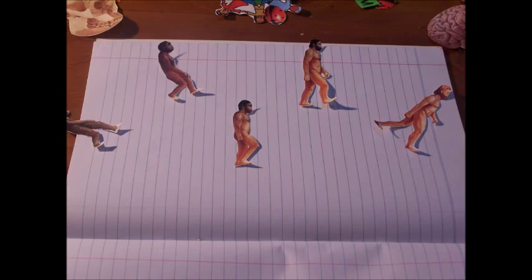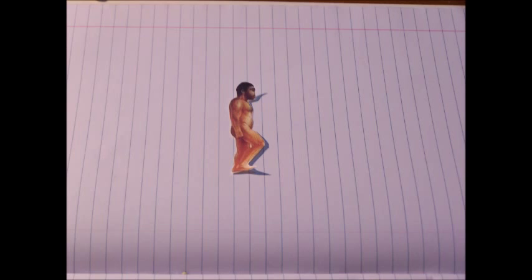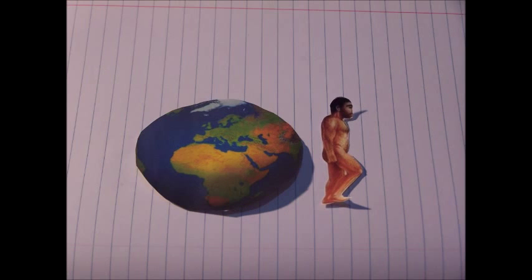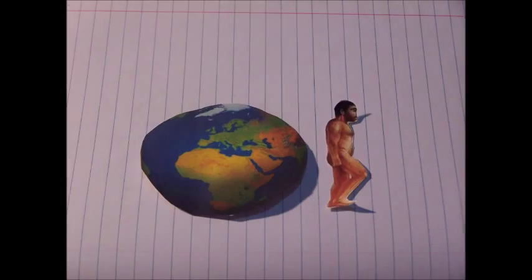The next main stage was Homo erectus, when species began developing more human-like proportions. The Homo erectus lived 1.89 million years ago to 143,000 years ago. They evolved in Northern, Eastern and Southern Africa and Western and Eastern Asia.